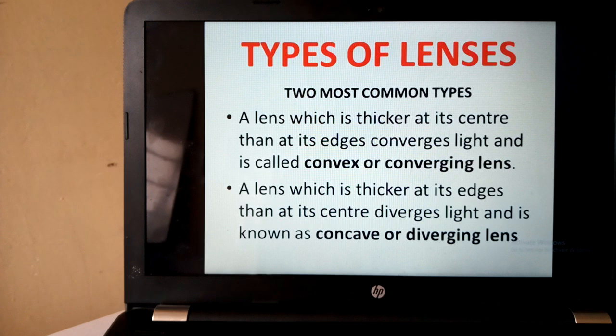A second type is a lens which is thicker at its edge than at its center. It's a kind of reverse of the first one. This kind of lens diverges light, and it is known as concave lens or diverging lens.